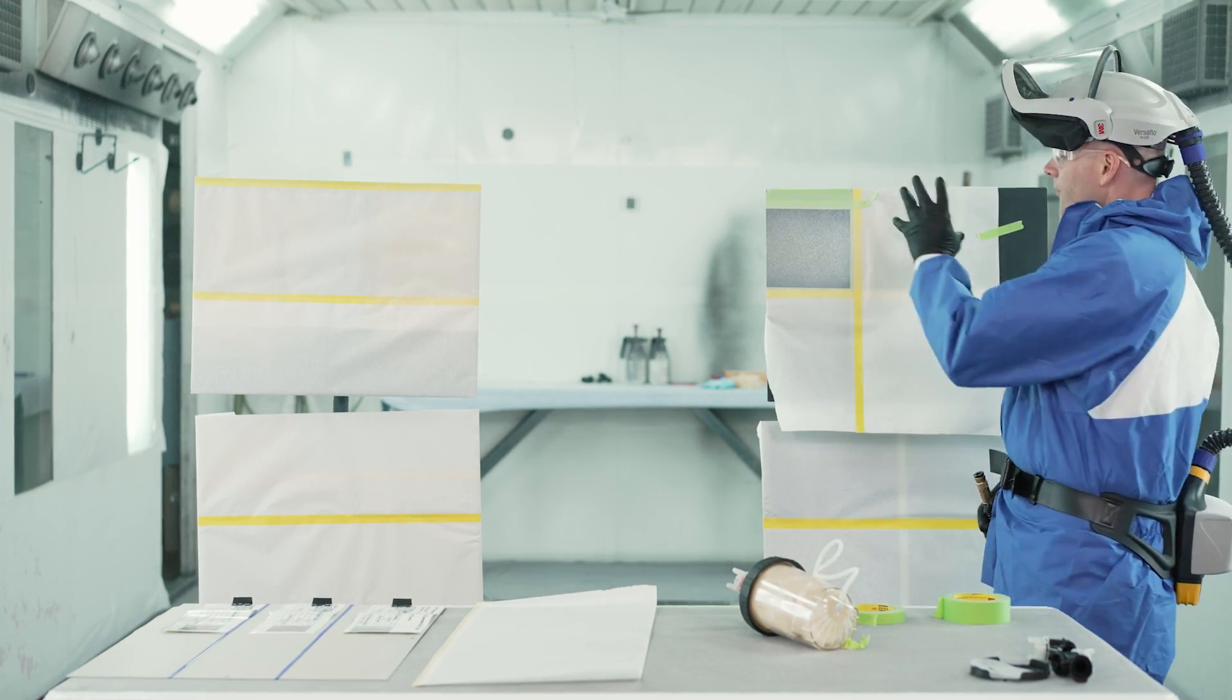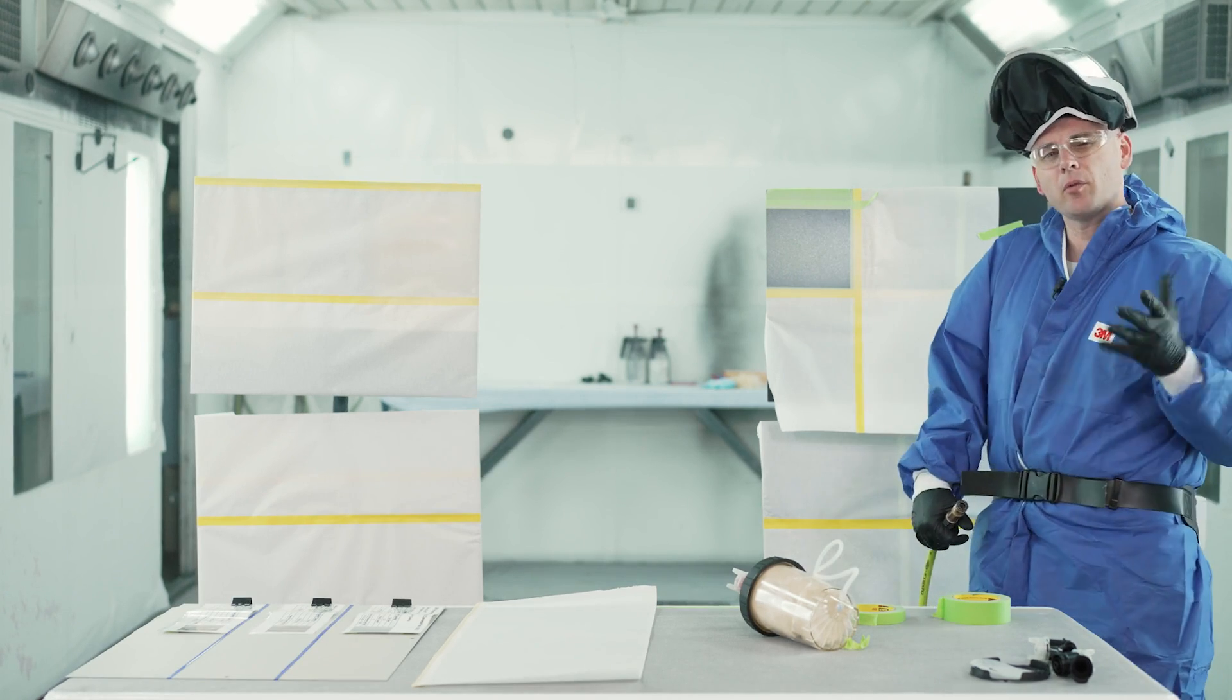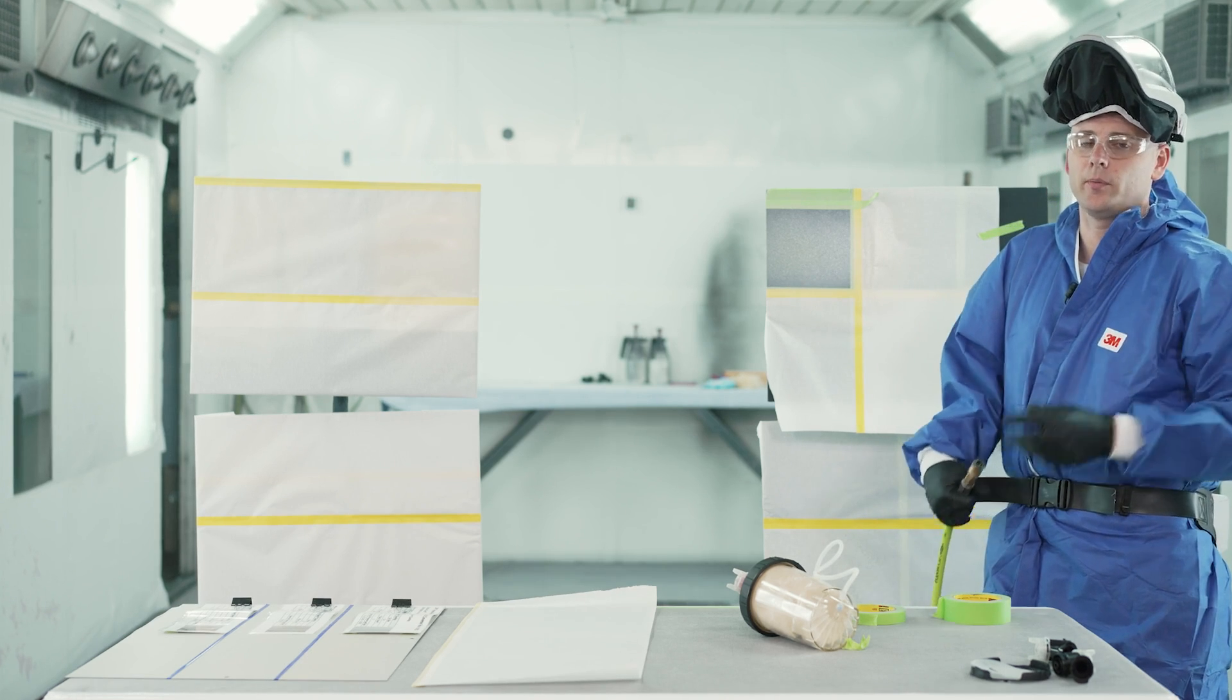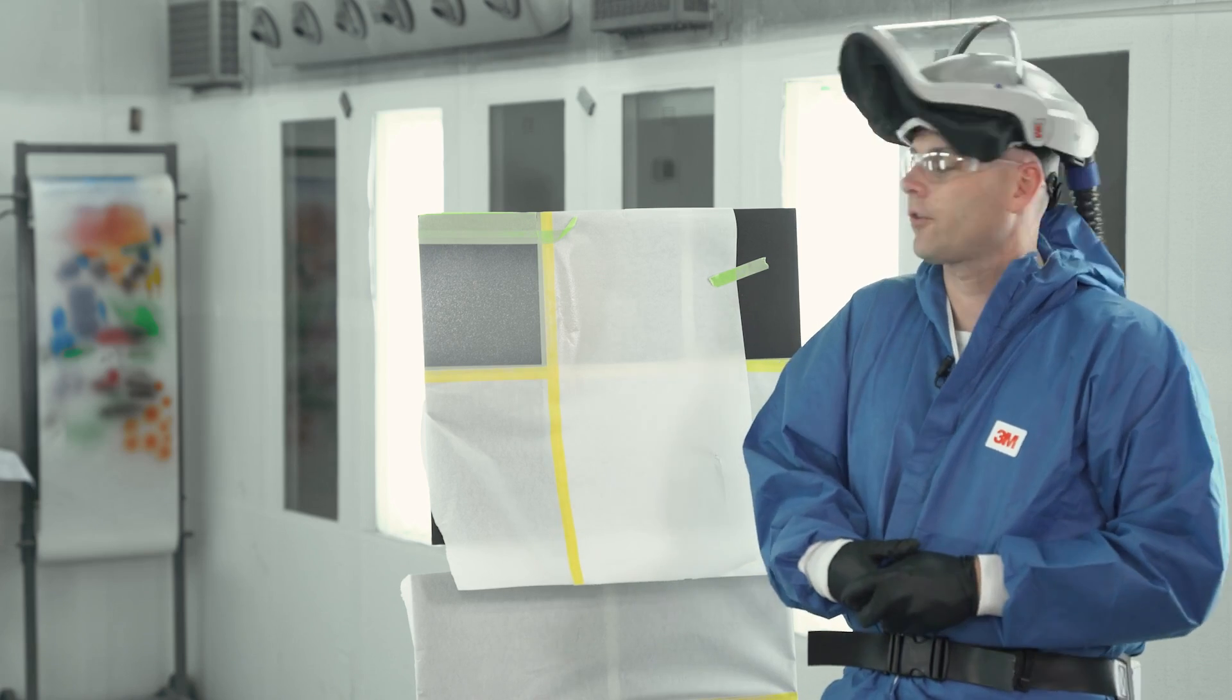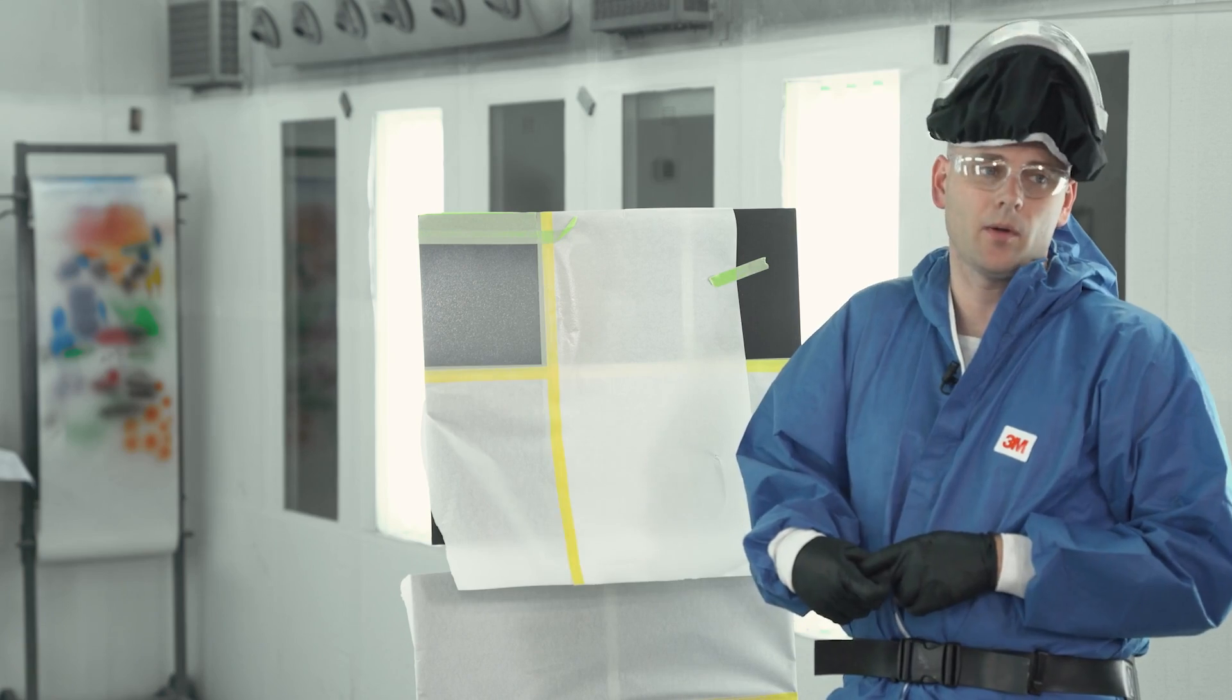So now that we have our nice fine to medium texture applied to the panel, we're going to let that dry for about 30 seconds to a minute. And then we're going to go ahead and peel that tape off before it firms up. Now that we've given our texture coating enough time to set up a little bit, we're ready to go ahead and peel our masking.